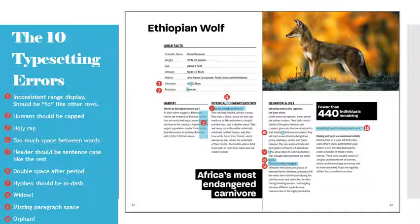Number seven: that dash is a hyphen — it should be an em-dash. You use em-dashes, the widest dash, in sentences where you would otherwise use double commas. You use an en-dash for ranges of information like dates and times. Number eight is a widow — you can never have just one word on a line. We need to re-rag or reflow that paragraph to get that word tucked in with at least one other word within that block.